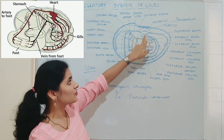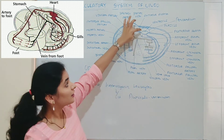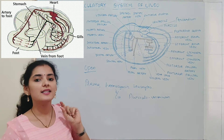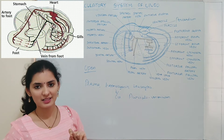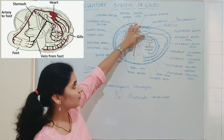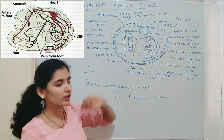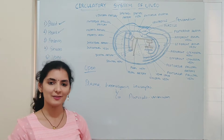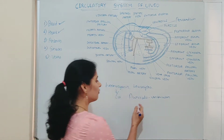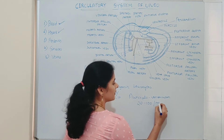Blood flows from the auricle to the ventricle through this aperture. The ventricle is a single chamber and is a thick-walled, highly muscular, contractile structure that receives blood from the auricle. The ventricle and auricle together form the heart of Unio. The heart of Unio beats about 20 to 100 times per minute.